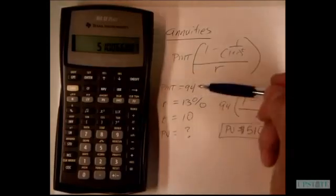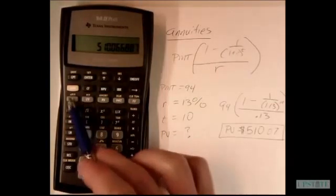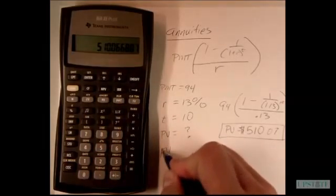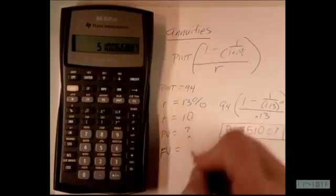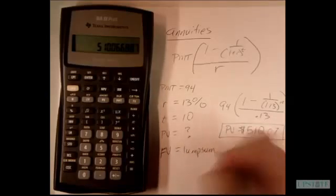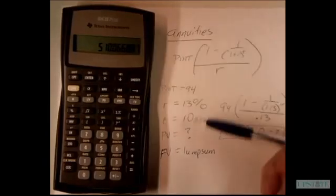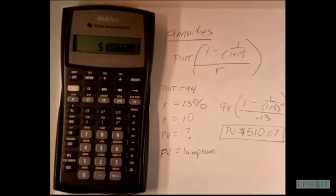Basically here, you notice we have four factors here that go into these buttons. The only one that we're missing is future value. Keep in mind that future value is a lump sum on the past problems that we've been working. We're using that future value as a lump sum. In this case here, we have 10 payments of $94. We don't actually have a lump sum that is coming at the end.